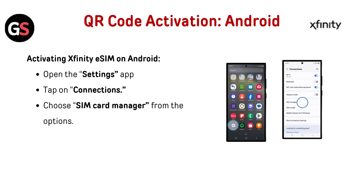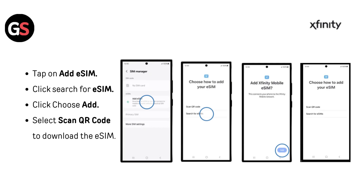QR code activation on Android. Open the Settings app and tap on Connections. Choose SIM Card Manager from the options. Tap on Add eSIM, click Search for eSIM, then click Add. Select Scan QR Code to download the eSIM.